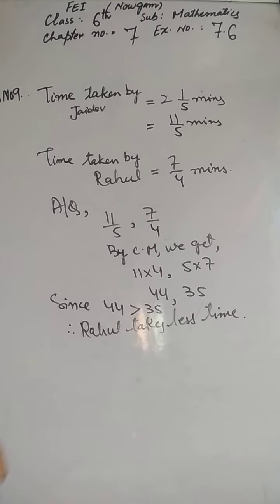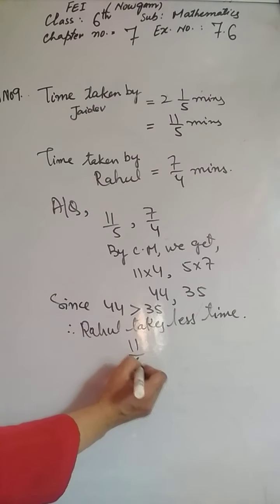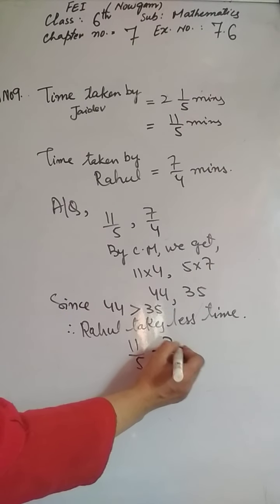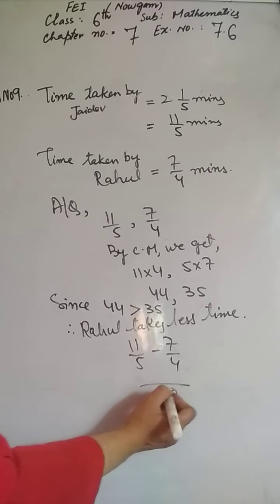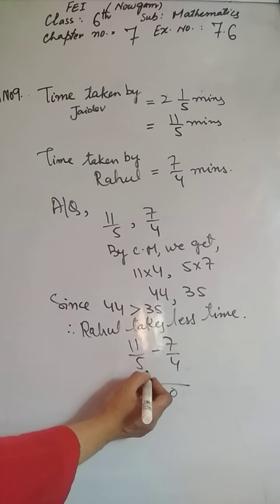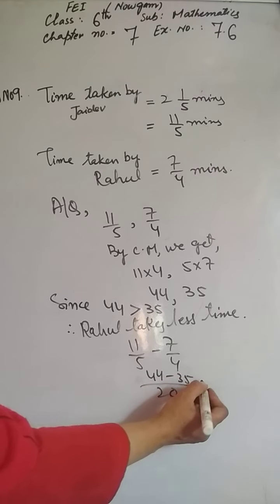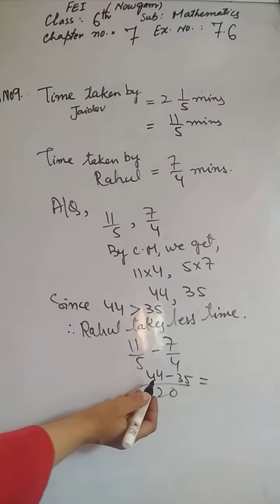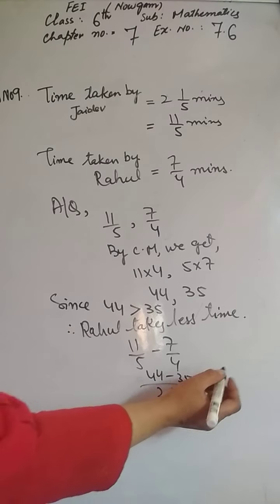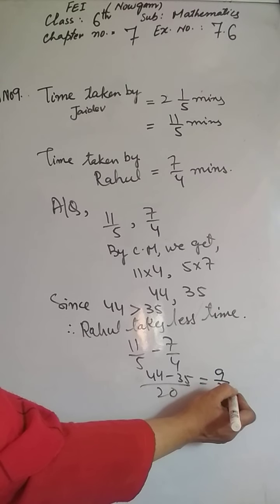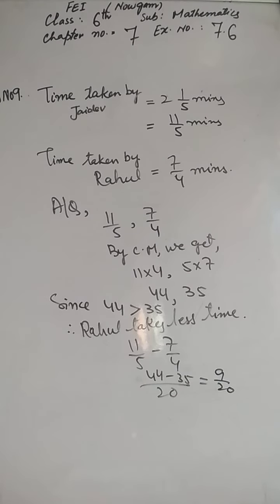By what fraction? 11/5 minus 7/4. LCM of 5 and 4 is 20. Cross multiplication: 11×4=44, minus 7×5=35. 44 minus 35 = 9. So 9/20 minutes. Rahul takes less time by 9/20 minutes. Yeh hamara chapter ho gaya complete — fractions ka. Hum milenge next chapter mein, next exercise ke saath. Tab tak ke liye Allah Hafiz!